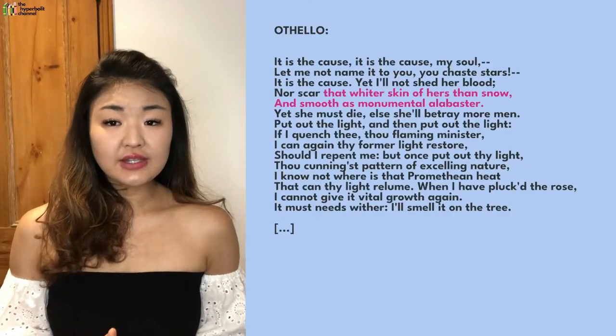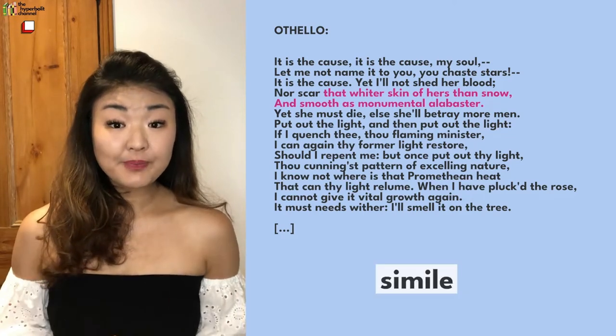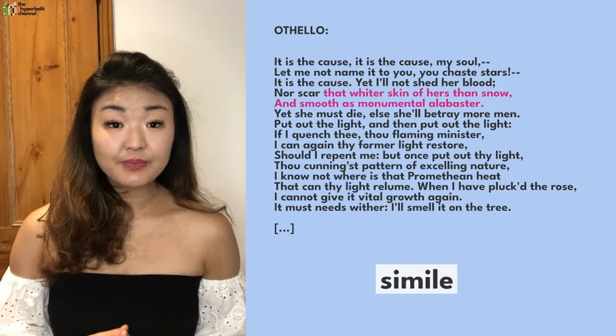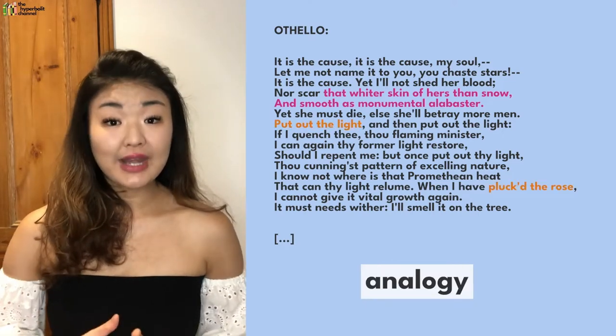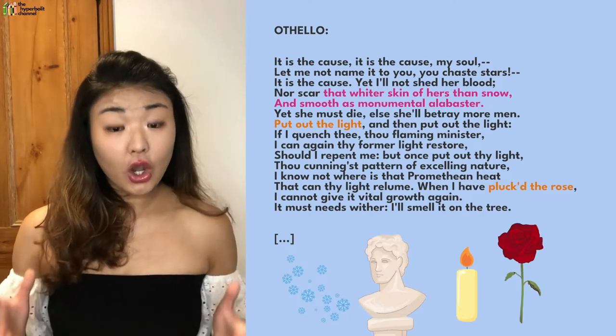I've deliberately left my analysis of the 'put out the light, put out the light' repetition to this section because it yields a more rewarding interpretation when discussed as an example of analogy. In Othello's speech, we see simile and analogy in descriptions like 'that whiter skin of hers than snow and smooth as monumental alabaster' — a simile comparing her skin to snow and alabaster. 'Put out the light' and 'plucked the rose' are examples of analogy. Snow, alabaster, light, and rose all share something in common: they are inanimate things. So is Othello objectifying his wife in this moment?